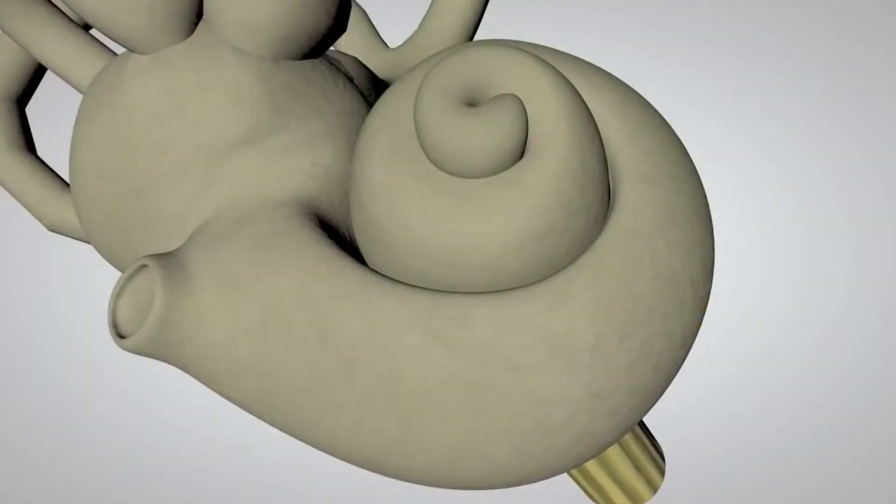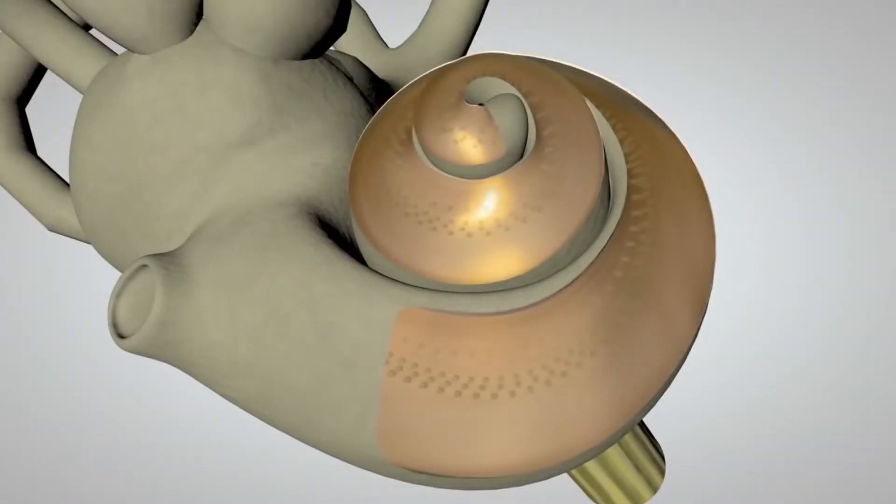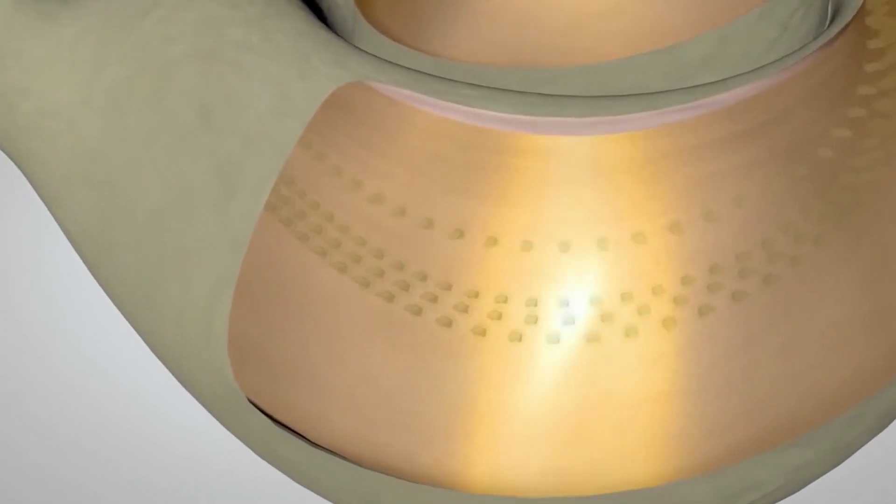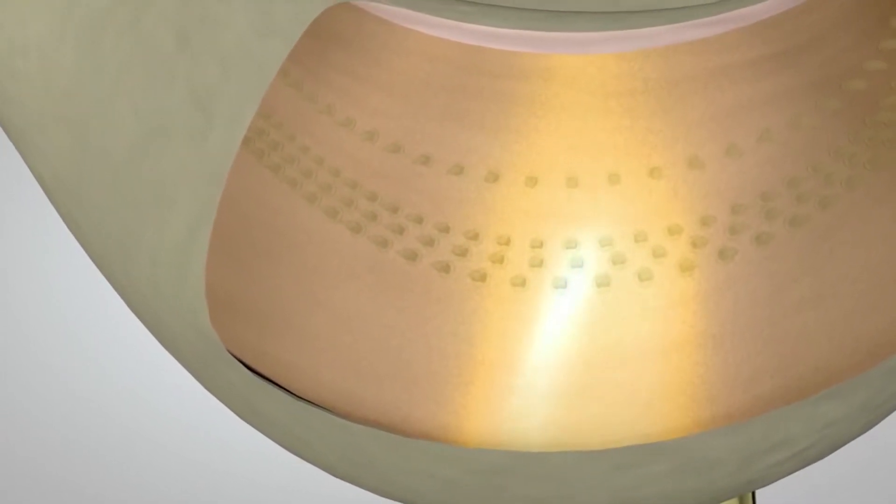Different hair cells respond to different frequencies of sound. The hair cells at the base of the cochlea detect higher pitched sounds, such as a piccolo or flute.